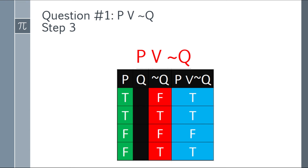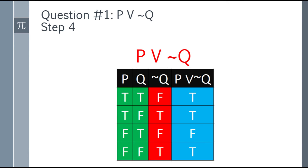Now we focus on P OR negation of Q. For OR, at least one statement must be true. First row: P is true and ¬Q is false — at least one true, so the answer is true. Second row: true and true — true. Third row: false and false — false. Fourth row: false and true — true. So the final answers for P OR ¬Q are: true, true, false, true.